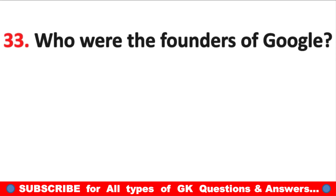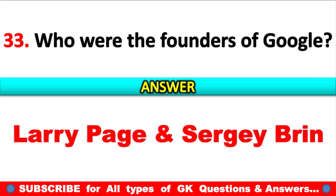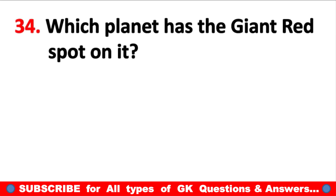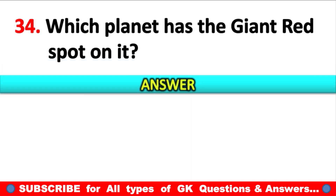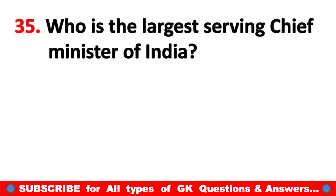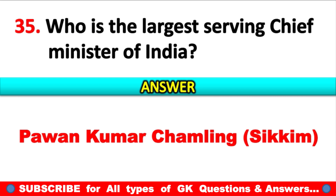Who were the founders of Google? Answer: Larry Page and Sergey Brin. Which planet has the giant red spot on it? Answer: Jupiter. Who is the longest-serving chief minister of India? Answer: Pawan Kumar Chamling, Chief Minister of Sikkim.